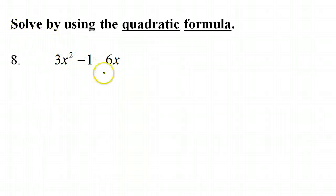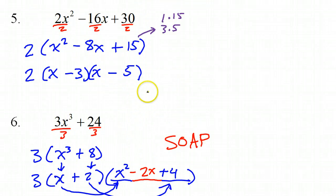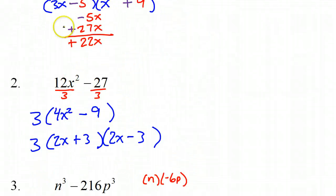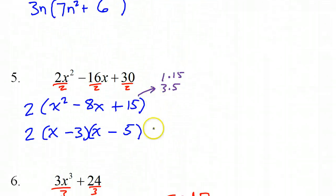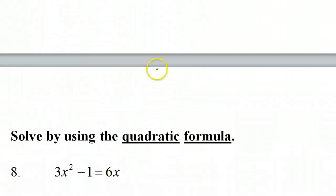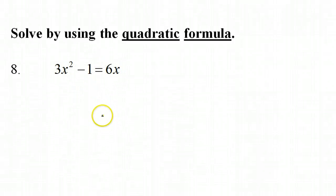Now we're moving into the solve problems. Notice that none of those previous problems had equal signs — they were just expressions, not equations. That's why we were not solving them; it would be incorrect to say those were solutions. That was just a different form of the original problem. We factored and stopped because that's all you can do when it's not an equation. Solving is what you do when you're finding the value of the variable. So we will solve this using the quadratic formula.